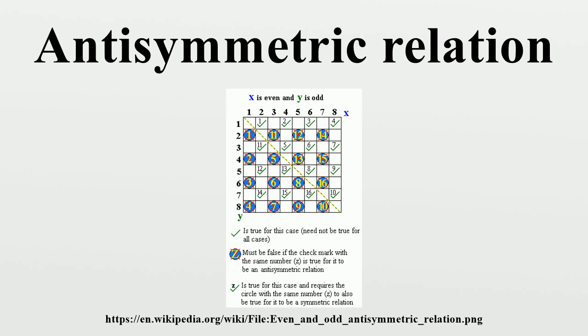Partial and total orders are antisymmetric by definition. A relation can be both symmetric and antisymmetric, and there are relations which are neither symmetric nor antisymmetric. Antisymmetry is different from asymmetry, which requires both antisymmetry and irreflexivity.